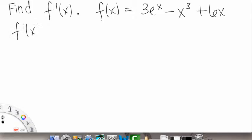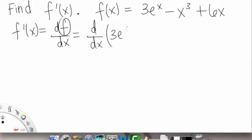So we have f prime of x. In Leibniz notation, that's df dx. And then this is also the same as d dx of our function of f, right? So that is 3 times e to the x minus x to the third plus 6x.